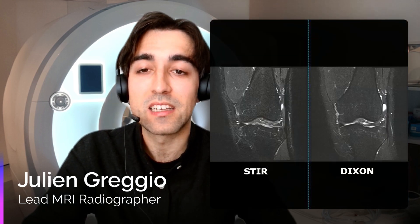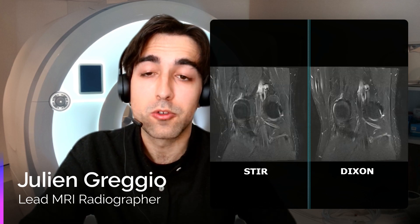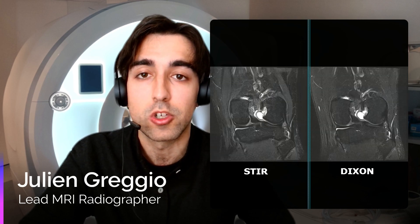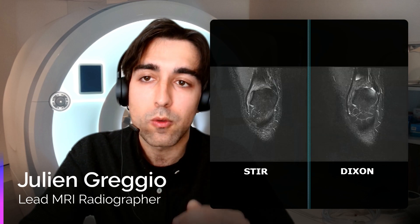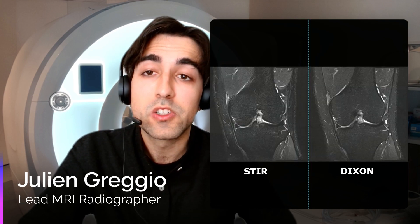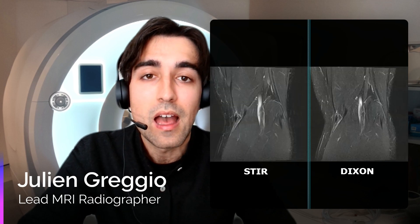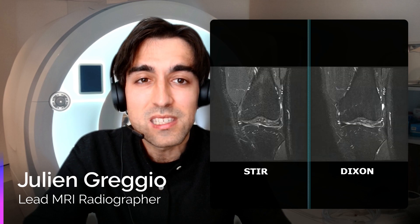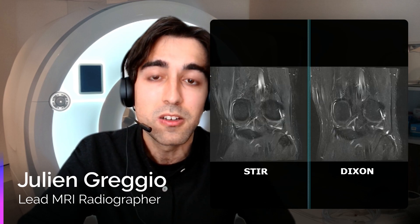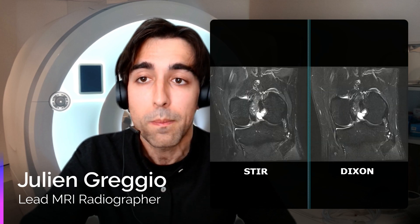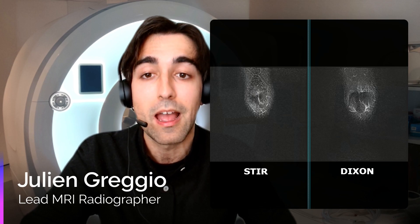Let's see now a quick comparison of the fat techniques evaluated so far. To keep this comparison as fair as possible, the images did not undergo any process of optimization — they have been simply taken from the vendor library and acquired as originally loaded on the scanner. So, STIR and Dixon — which one do you prefer? Both are characterized by uniform and homogeneous fat suppression. STIR images are a little bit more grainy compared to Dixon, but still the contrast differences between different tissues can be very easily picked up. I would say that both are very valuable options when it comes to MSK imaging.